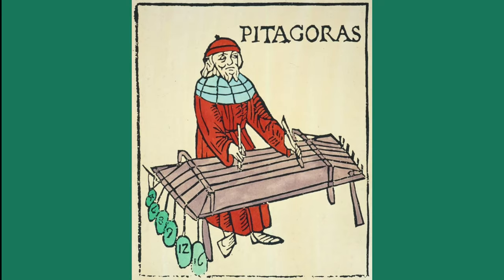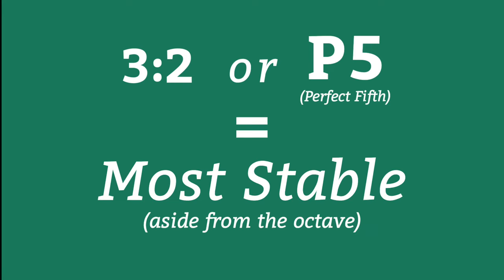There's a good amount of math involved here that I won't try to explain. For now, all we need to know is that according to the Pythagorean tuning, this 3 to 2 ratio, which is also known as a perfect fifth, is considered the most stable interval in Western music.